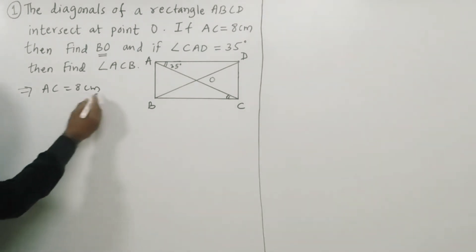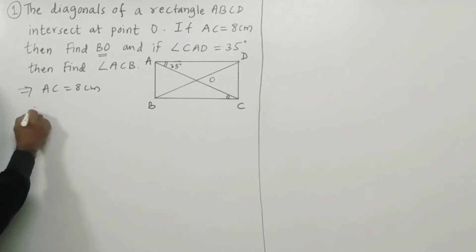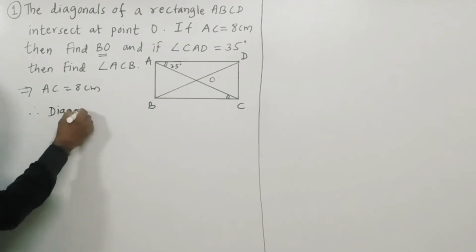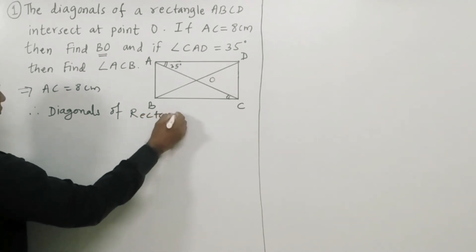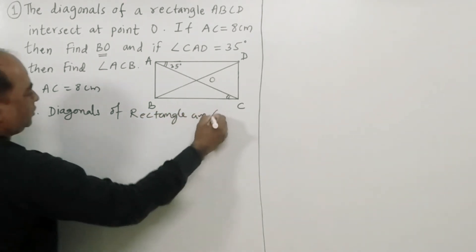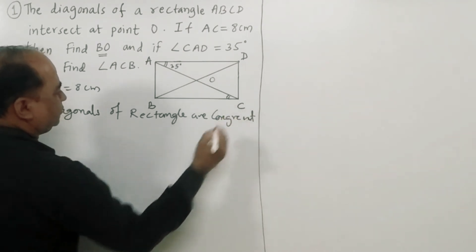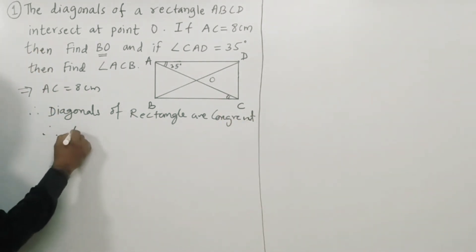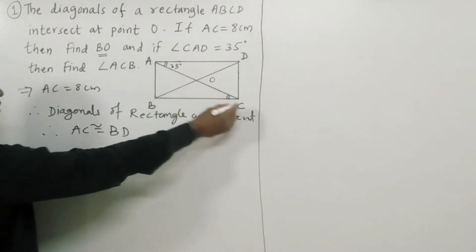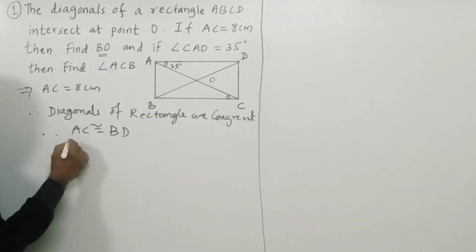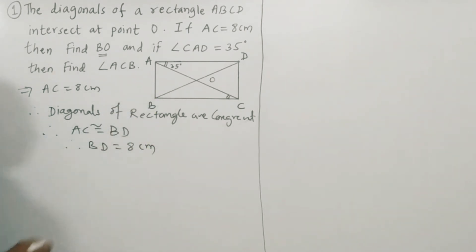First, it is given that diagonal AC is equal to 8cm. By property, diagonals of a rectangle are congruent, therefore AC is congruent to BD. So BD is also equal to 8cm.